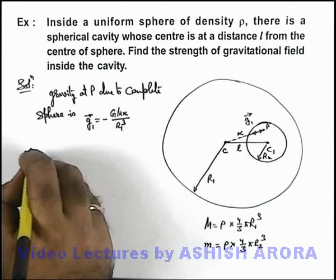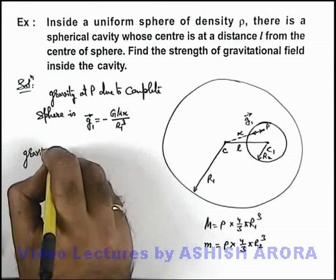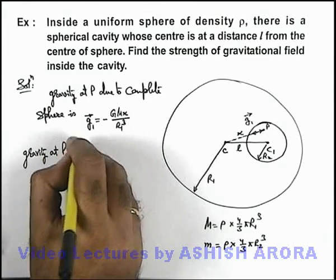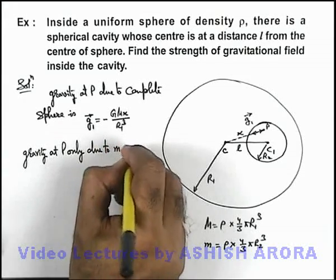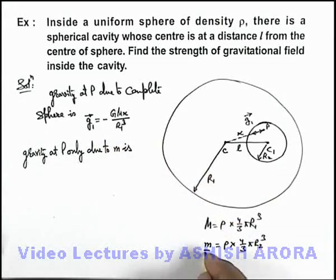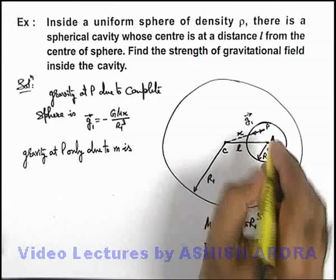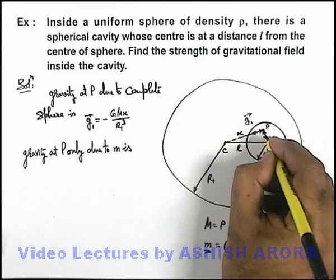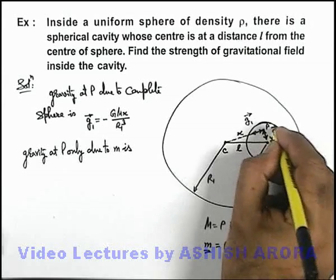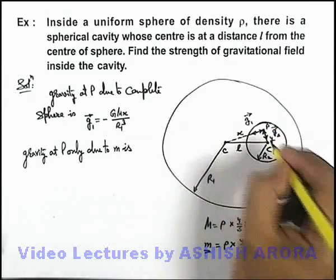Similarly, gravitational field strength or gravity at P only due to small m is - small m is just the mass which is enclosed within the zone of cavity and say it is located at a position vector y. Then this g₂ will act in the direction radially inward toward the centre.